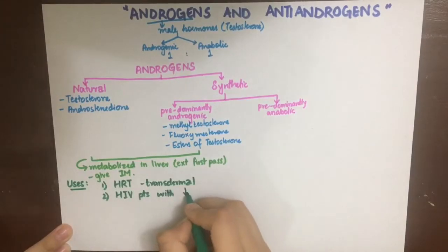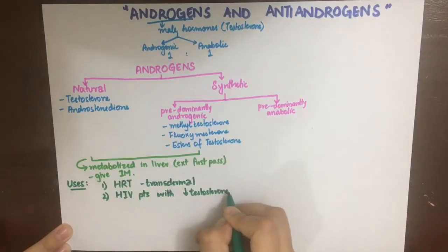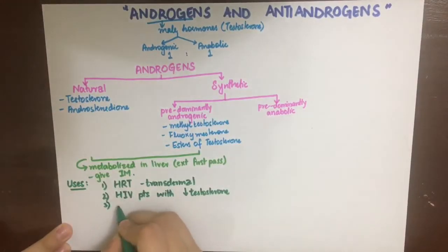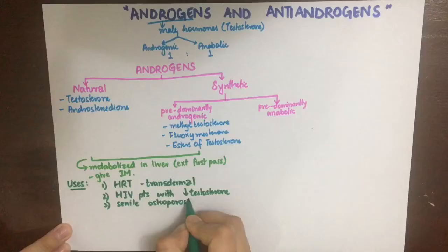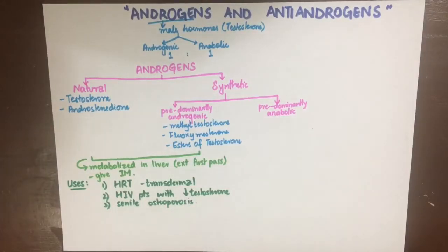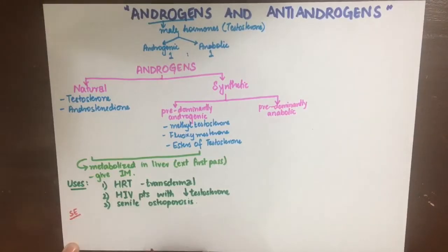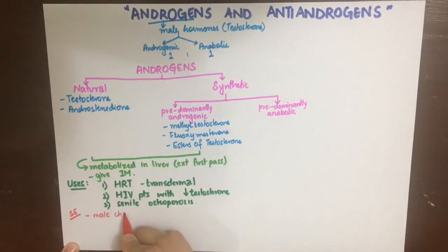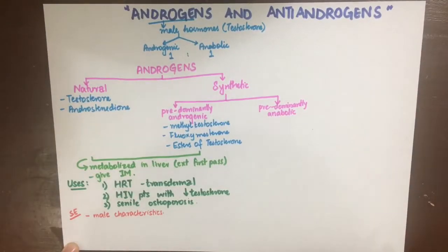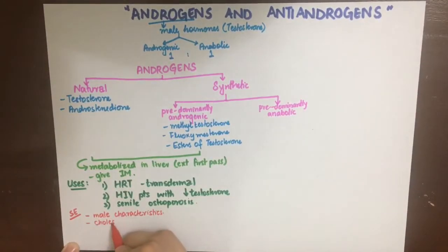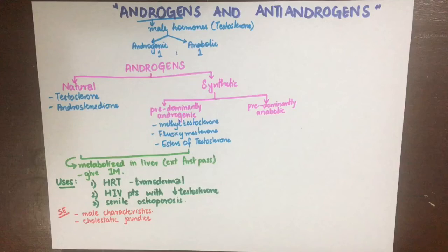These androgens can also be used in HIV patients with decreased testosterone to increase muscle mass and strength. Thirdly, they can be used in senile osteoporosis, that is, osteoporosis related to age. Side effects when used in females can include development of male characters such as hirsutism, deep voice, breast atrophy, and acne.